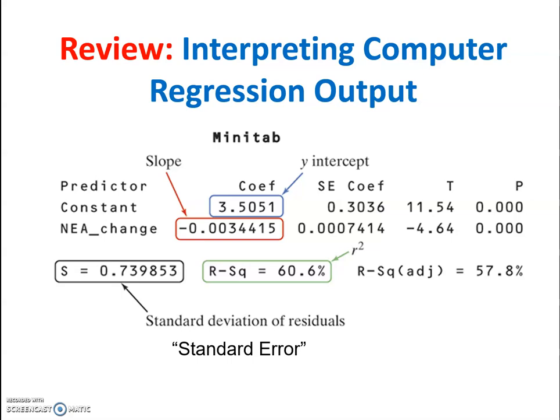When you're looking at computer output, the number that is next to constant and coefficient, that is the y-intercept, and the number beneath that is going to be your slope. Other important values, this s right here is the standard deviation of the residual. In this chapter, we're going to call that also the standard error, and then you have your r squared value here. Eventually, we're going to learn about what the number next to the slope means, to the right of it, and then you'll notice that there's t and p. We'll also look at that later as well. Spoiler alert, the p has to do with p value.